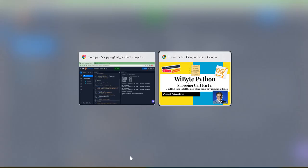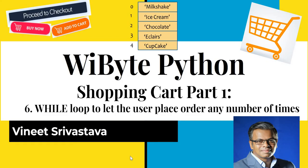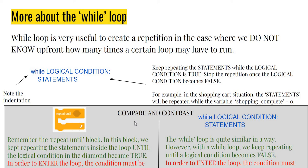Before wrapping up, let me compare this with the similar block in Scratch — the 'repeat until' block. The 'repeat until' block repeats code until a condition becomes true. The while loop is similar but not exactly the same: while a condition is true it repeats, and the moment the condition becomes false it exits. So for us, while `shopping_complete == 0`, the moment we set it to one, the loop exits. 'Repeat until' is essentially reversed — keep repeating until it becomes true — but the intent is really quite similar.